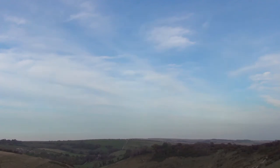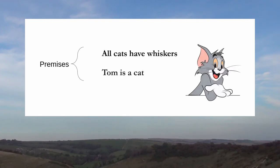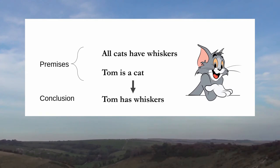A simple, classic example of a prose deduction is as follows. First we have the premises: all cats have whiskers, and Tom is a cat. And from these two, we get the conclusion that inevitably follows: Tom has whiskers. The reason for being so clear and precise in the structure of the logical argument is so that any reasonable person would be compelled to agree that the conclusion follows undeniably from the premises.